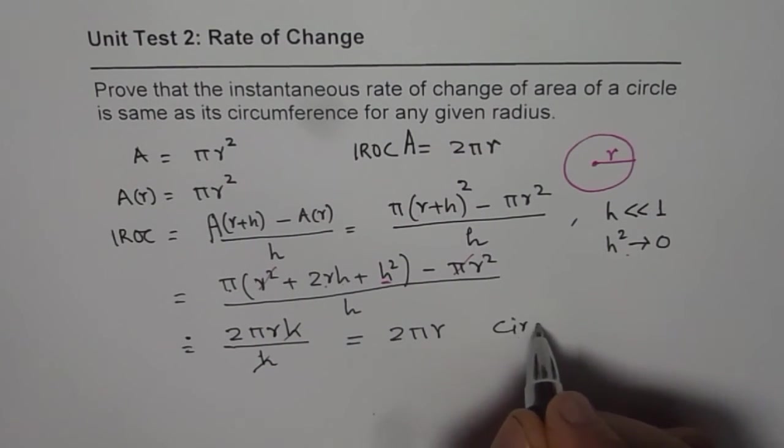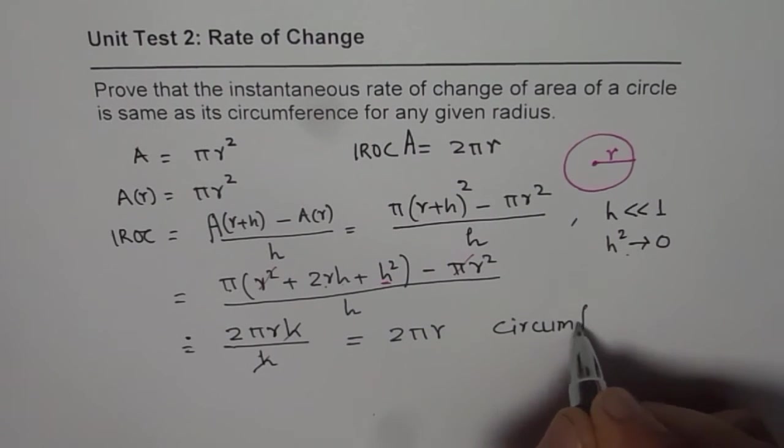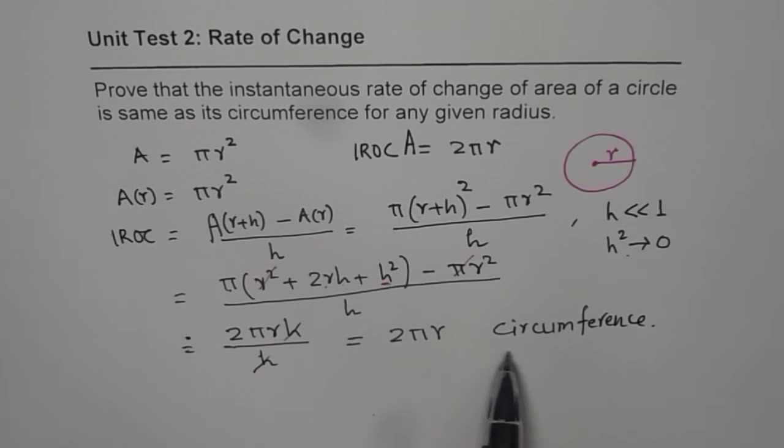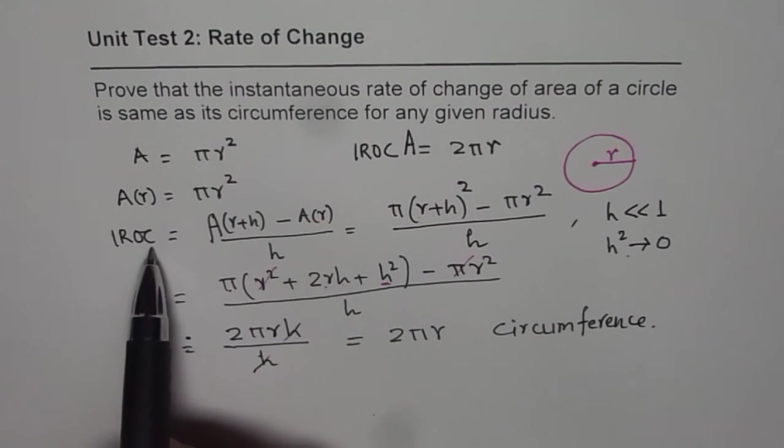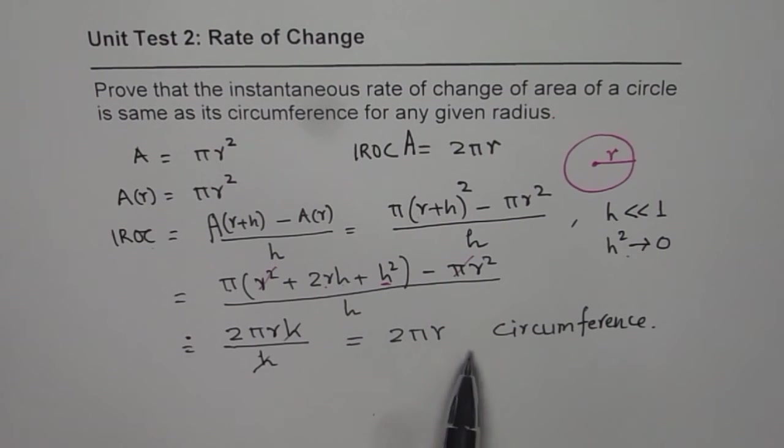That is circumference. So at any given instance of time, the instantaneous rate of change of area is same as circumference of that circle. So that is how we can prove it. I hope you appreciate it. Thank you.